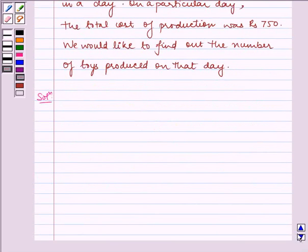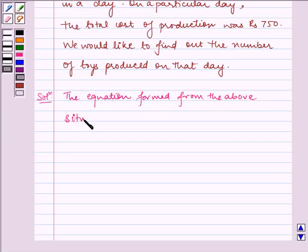Now let us write the solution. The equation formed from the above situation is x squared minus 55x plus 750 is equal to 0.